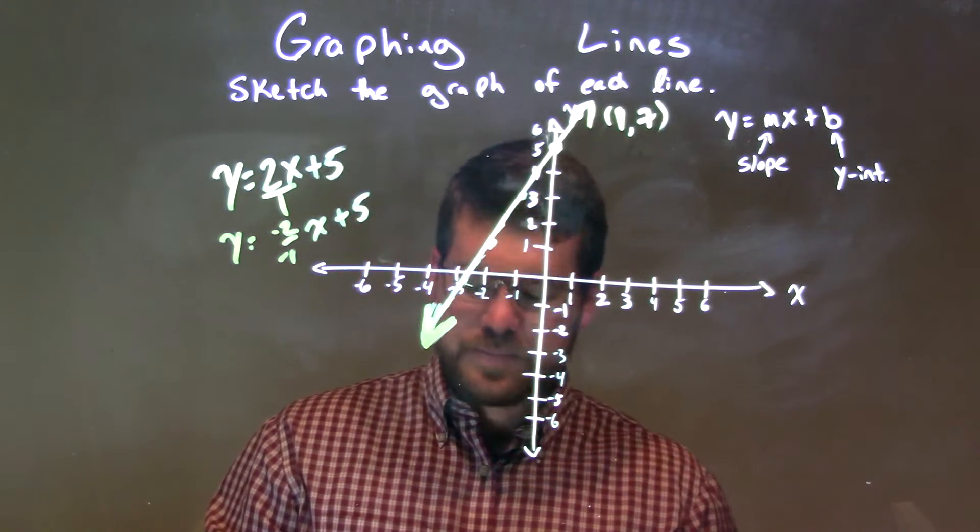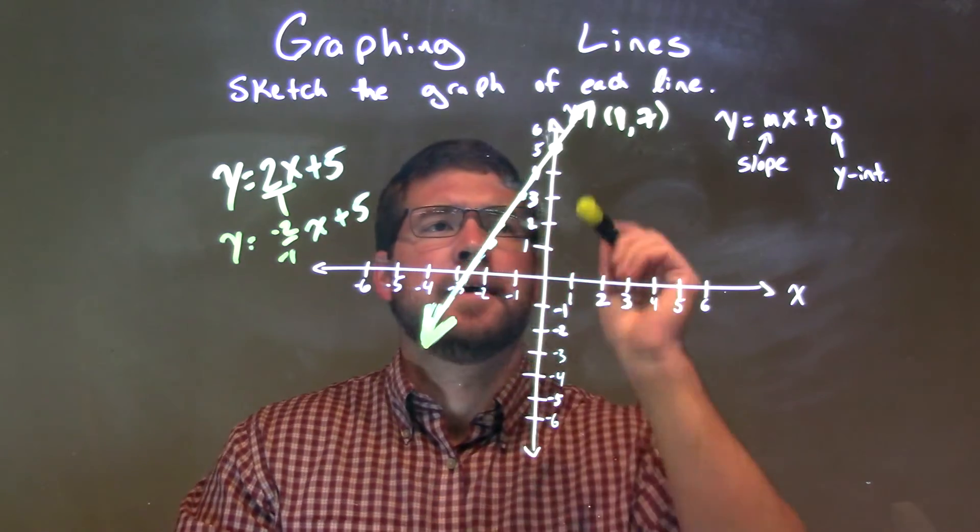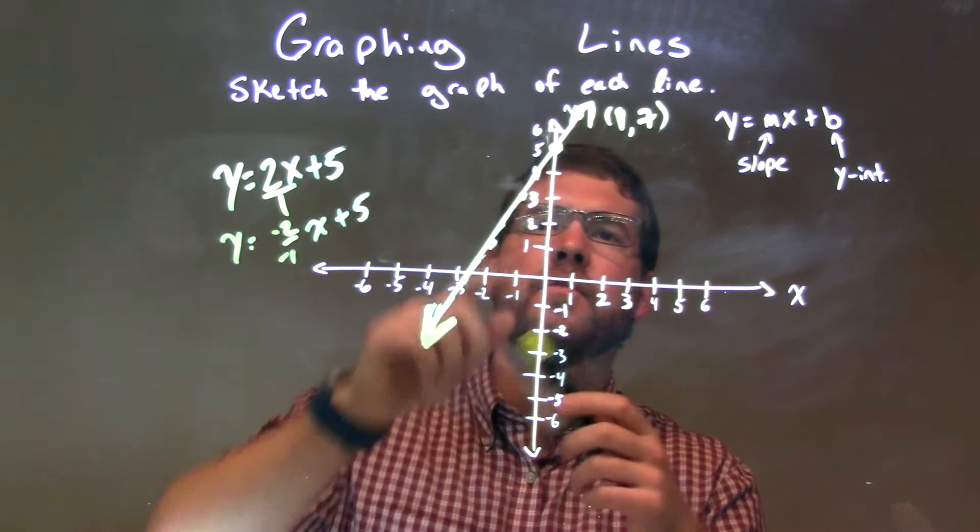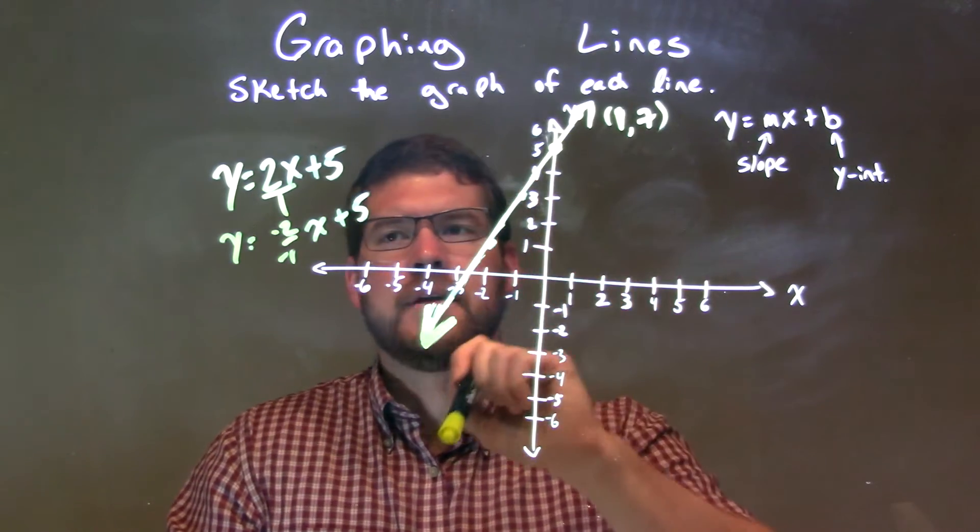So we have our equation with our graph. Y equals 2x plus 5, right there. So again, quick recap. Plus 5 is our y-intercept. We put a dot right there.